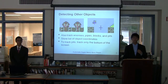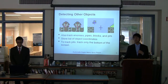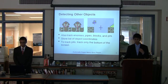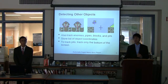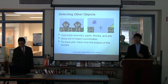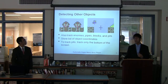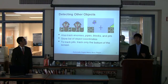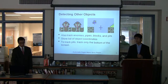We then tracked other objects that Mario needed to avoid. We used the same method we used to track Mario, but we used a color that was unique to each object. For a pipe, we would find the green. For enemies, we would use white. To track pits, we would search only the bottom half of the screen and search for blue.